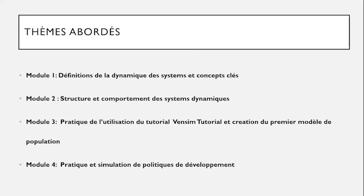Le second module portera sur la structure et le comportement des systèmes dynamiques : comment lier ensemble les variables, comment établir les diagrammes, comment modéliser la dynamique des systèmes en mettant les différents types d'actions et de rétroactions entre les variables, et quels sont les différents types de variables — les variables de flux, les variables de stock, etc.